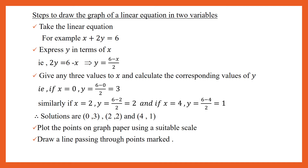Give any three values for x and find out the corresponding value for y. If x is equal to 0, y will be (6 minus 0) by 2, which is equal to 3. Similarly, if x is equal to 2, y will be (6 minus 2) by 2, which is 4 by 2, equal to 2. If x is equal to 4, y is equal to (6 minus 4) by 2, which gives 2 by 2, equal to 1.